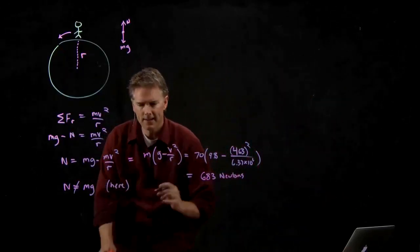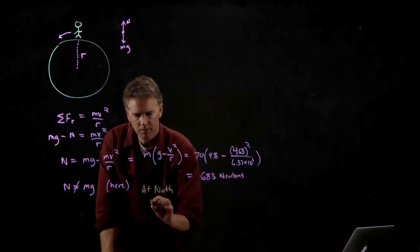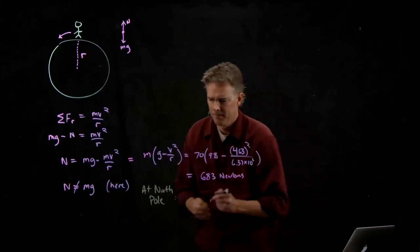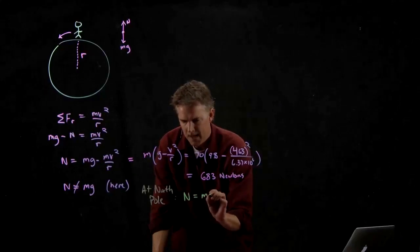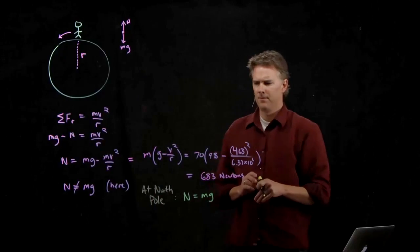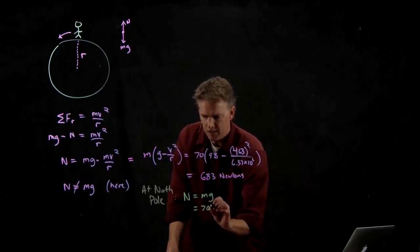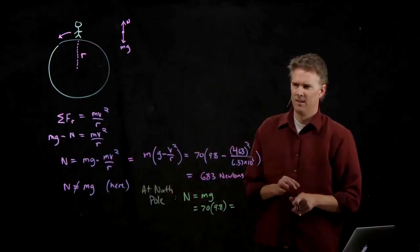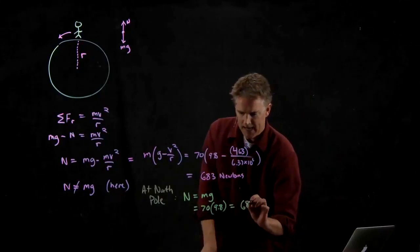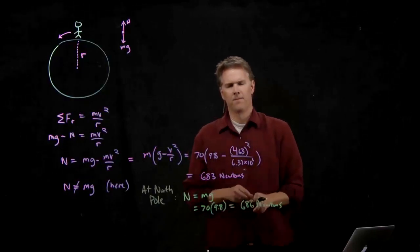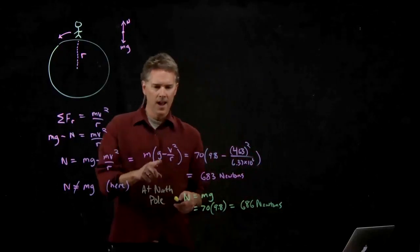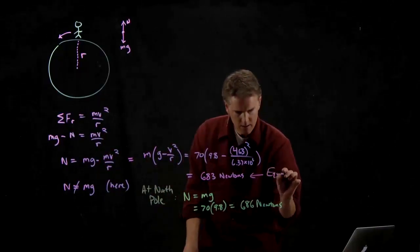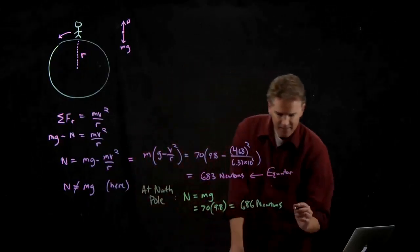What does that mean? 683 newtons. What if you were at the North Pole? What would your normal force be if you're at the North Pole? It would be Mg. What is Mg? It's 70 kilograms times 9.8. And if you punch that into your calculator, what do you get? 686 newtons.